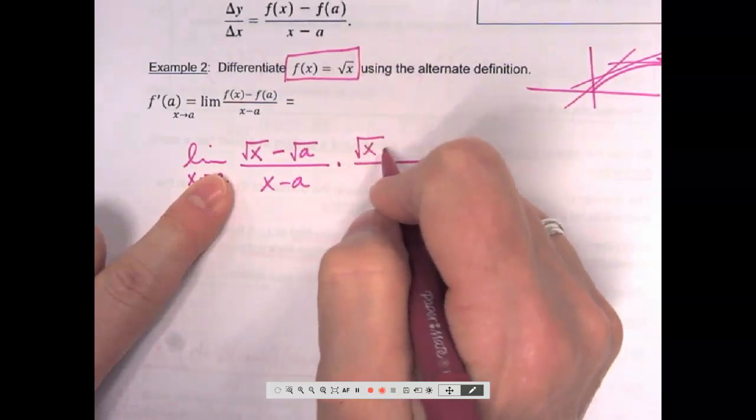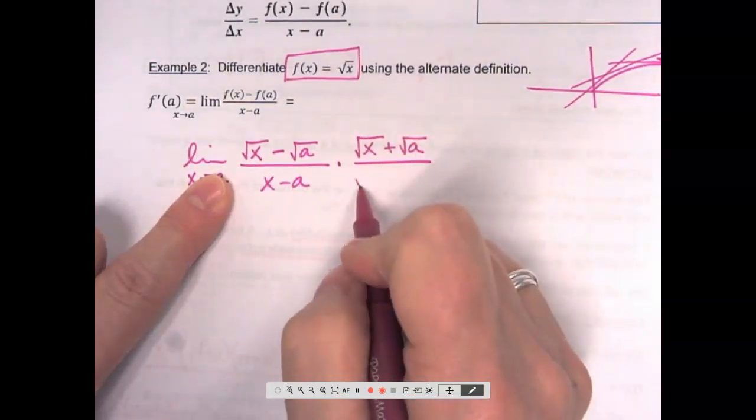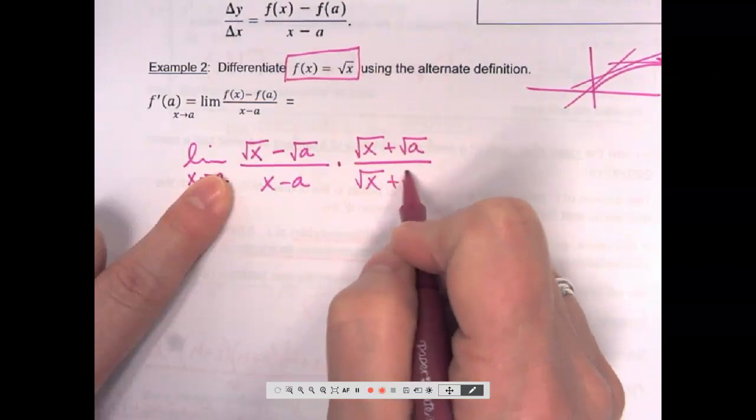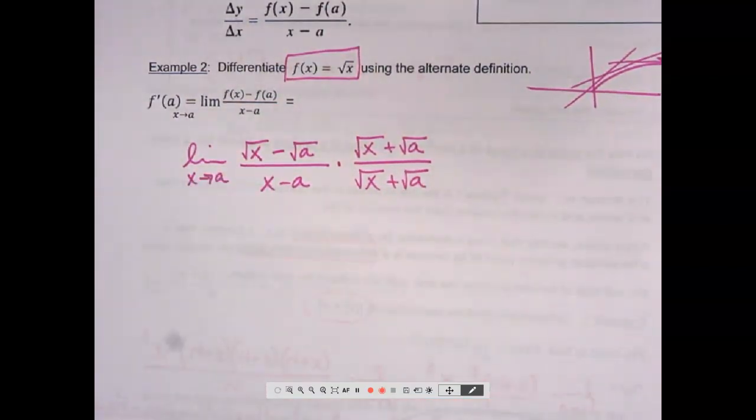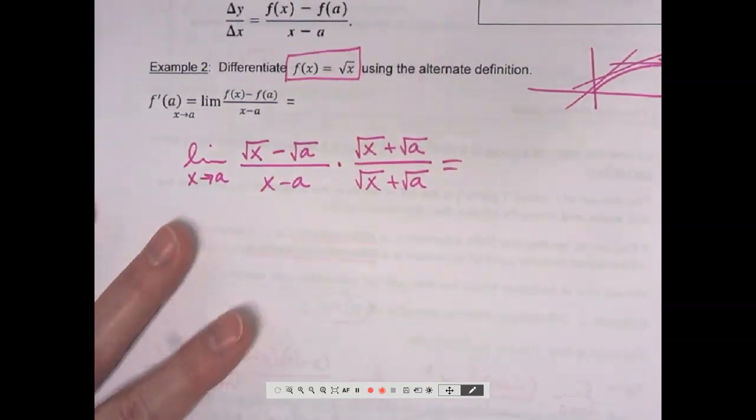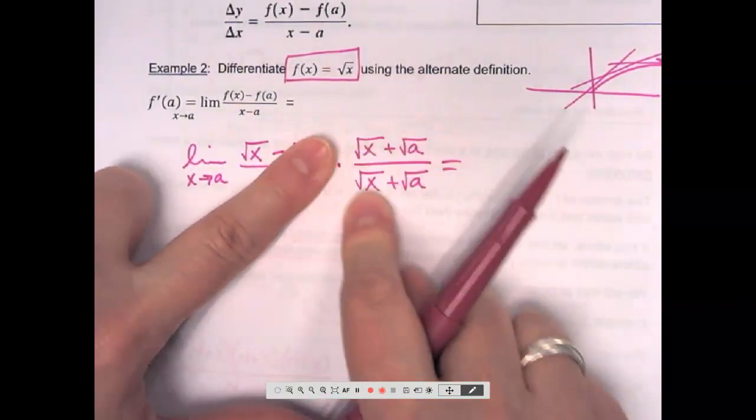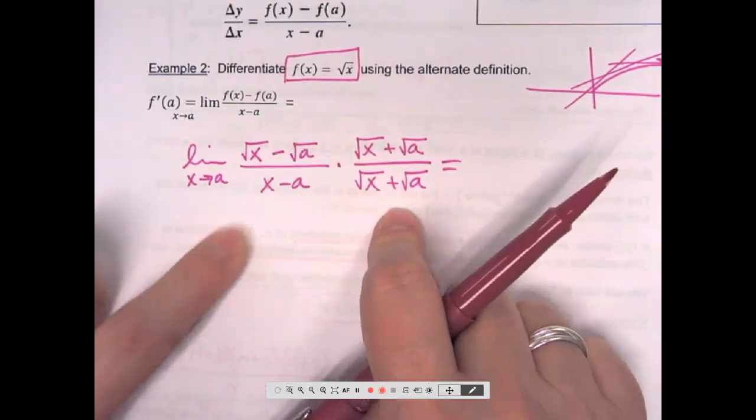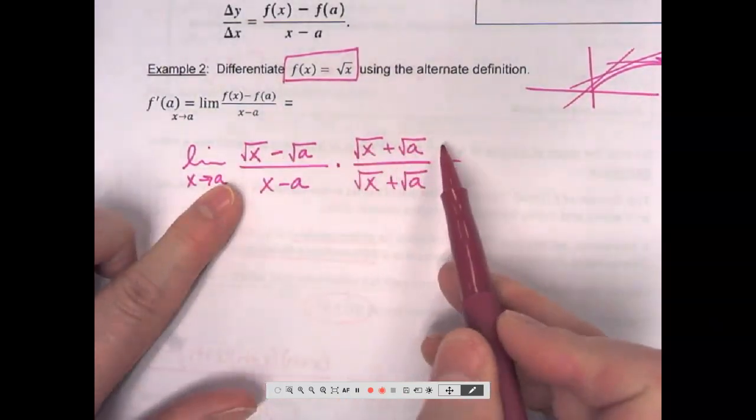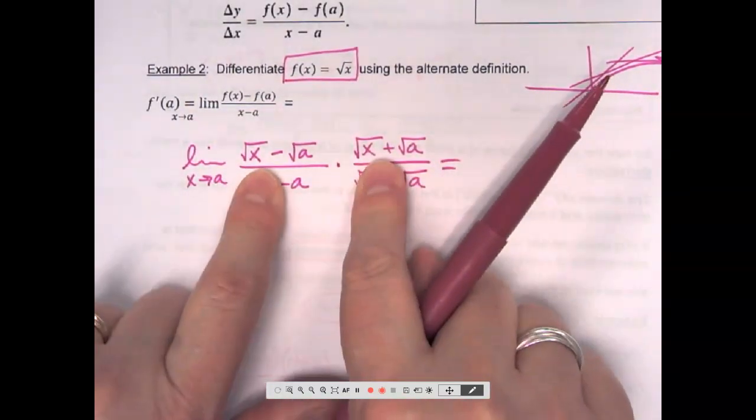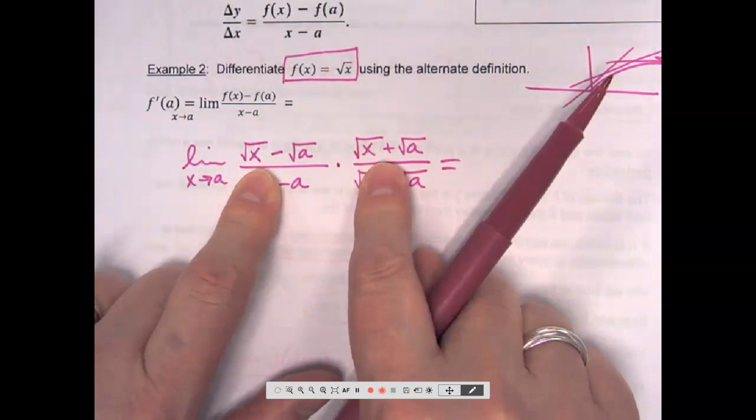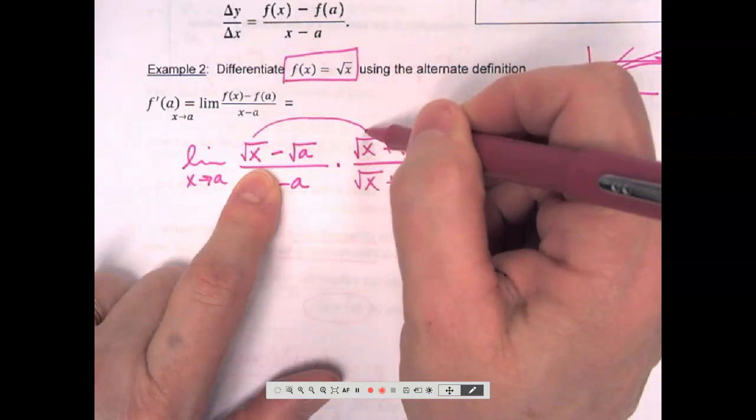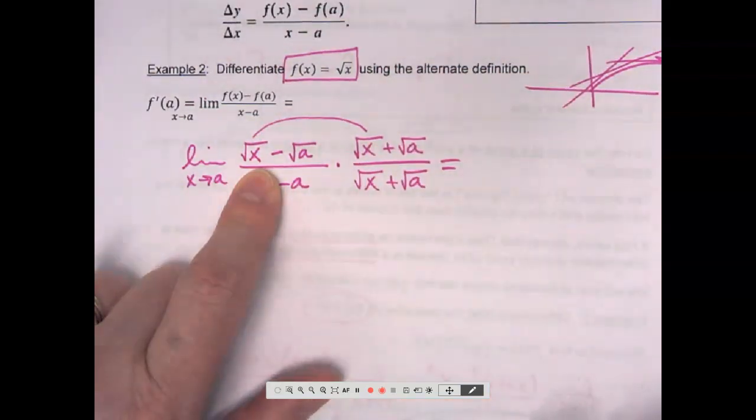So, I'm going to multiply by square root of X plus square root of A over square root of X plus square root of A. Now, you would not have known to do this. This is like a whole new thing to you. So, if you're like, I wouldn't have known to do that. No, you wouldn't. But, you're seeing it now. So, this weird, strange looking fraction is really just one. The numerator is the same as the denominator. So, that's a fraction of one. So, I'm going to multiply straight across. Which basically means I have to foil this out.